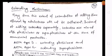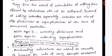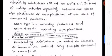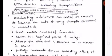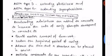Retarding plasticizers: many times the extent of retardation of setting time offered by an admixture alone is not sufficient. Instead of adding retarders separately, retarders are mixed with plasticizers or super plasticizers at the time of commercial production. ASTM Type D and ASTM Type G are examples of such combined admixtures.